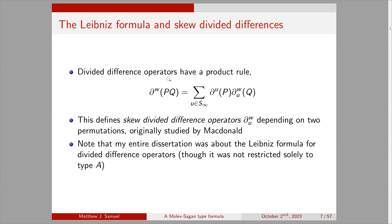Divided difference operators satisfy a product rule, also called the Leibniz formula. Applying ∂_w to the product pq expands as a sum over all u in S_infinity of ∂_u(p) times a skew divided difference operator ∂^{u,w}(q). These skew divided difference operators depend on two permutations, and I believe they were originally studied by Macdonald. My dissertation was entitled 'The Leibniz Formula for Divided Difference Operators,' and it was not restricted solely to type A.